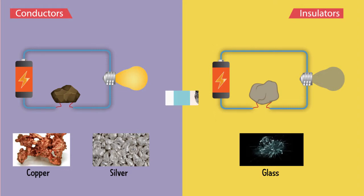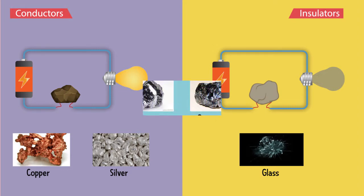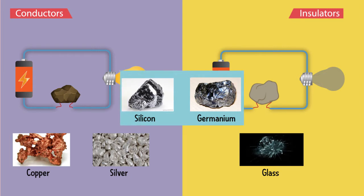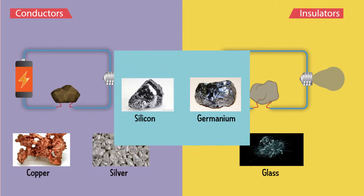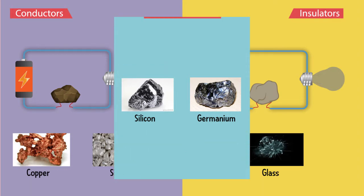But there are some elements whose conductivity lies between that of conductors and insulators. Neither do they conduct like conductors, nor do they show resistance like insulators. Silicon and germanium are such elements, and these are called semiconductors.